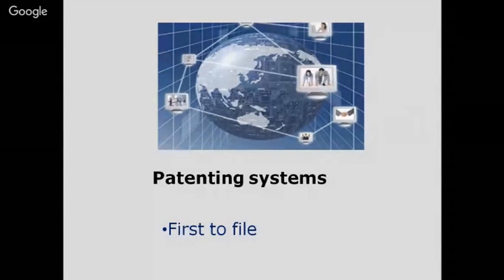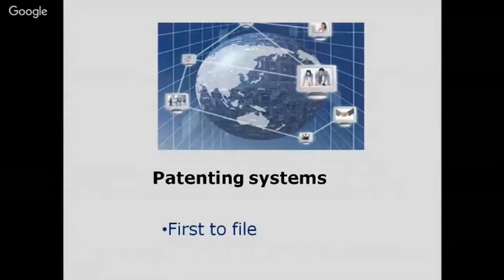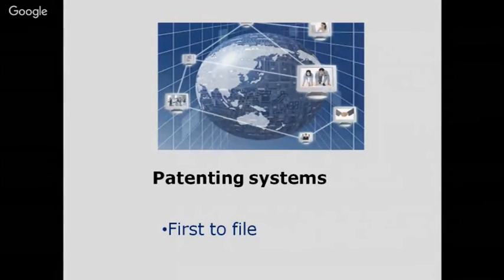Patent documents are published in more than 100 countries, covering all fields of science and technology, with more than 2 million patents filed every year. These patents are available in various languages including English, German, Spanish, Chinese, and French. The range of patents varies from very sophisticated equipment like supersonic airplanes to simple items like chairs or spades.